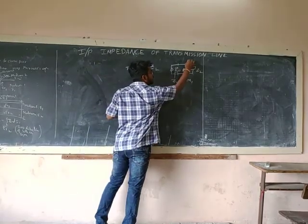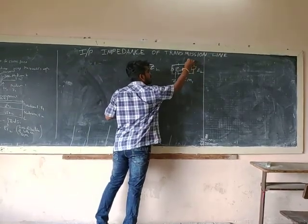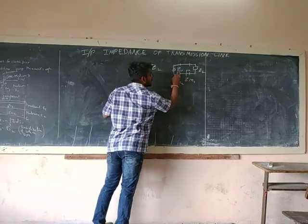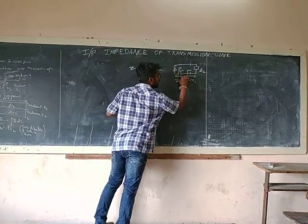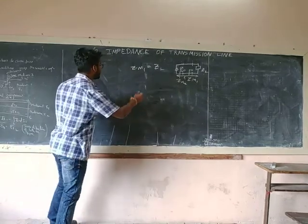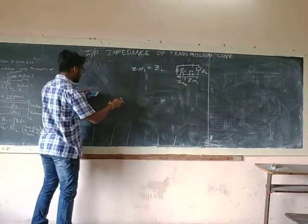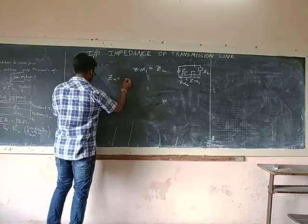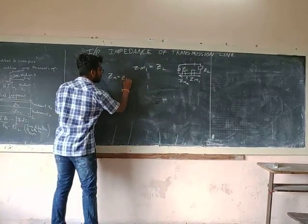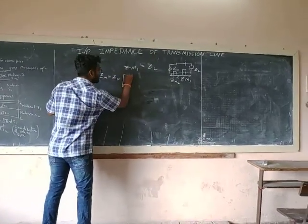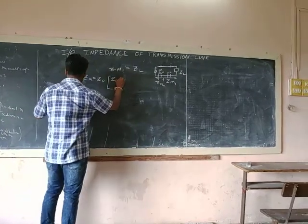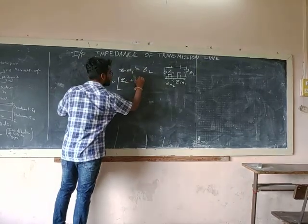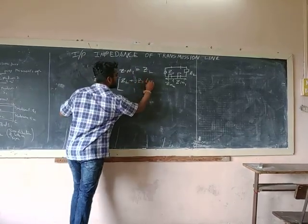But if that boy says, what is input impedance from this point? Let's assume this length is L. So, we have a formula for that: Zin equal to Z0 times (Zn plus j Z0 tan) divided by (Z0 plus j Zn tan).